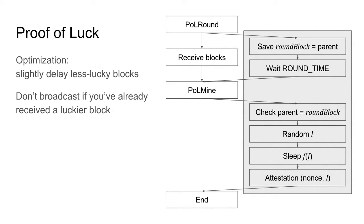One slight optimization: we added the sleep function f(L). L is a random value in a uniform distribution between zero and one, and our sleeping procedure is just one over L. So good luck values — large luck values close to one — give you a very small sleep time. If you have a very bad luck number, you're sleeping for a very long time — in fact, you'd be sleeping for minutes. This is just a slight optimization to promote good blocks to propagate on the network before bad blocks do, and therefore good blocks have a better chance of being appended as the next block on the blockchain.